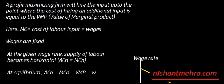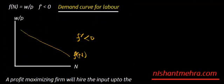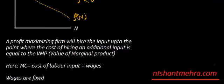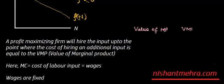Up until now we have seen the demand for labor side. To recapitulate, this was the demand curve for labor which we saw in the last lecture. A profit-maximizing firm will be hiring input up to the point where the cost of hiring an additional input is equal to the value of marginal product — VMP — which is equal to price multiplied by the marginal product of labor.